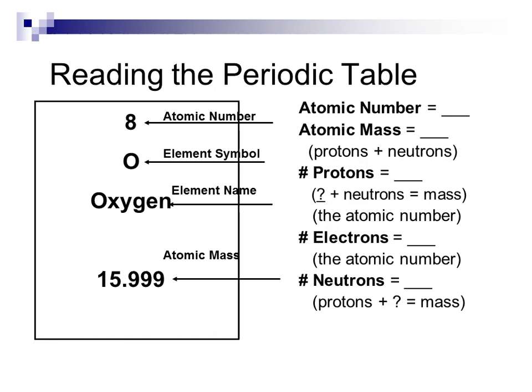So when we read the periodic table, we have several pieces of information in every block. So we have oxygen here as our first example, and the very top number is 8, and it's the whole number, and so that tells us that's the atomic number. The symbol is the one or two-letter abbreviation for the element name, and then the atomic mass is at the bottom, and that's the number that is normally followed by two or three decimal places.